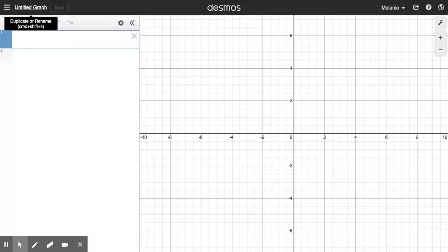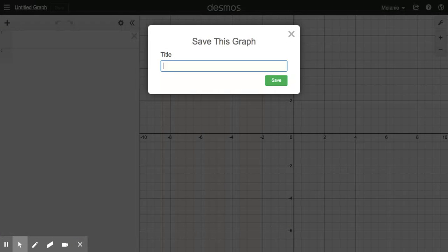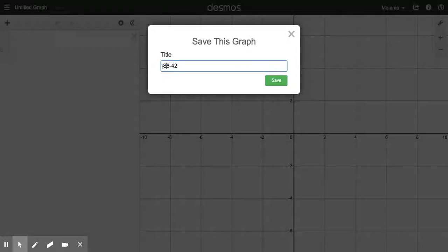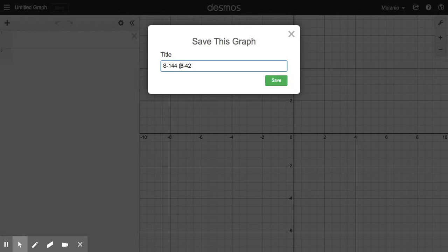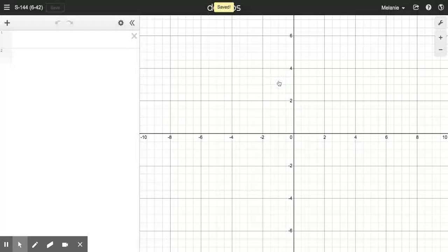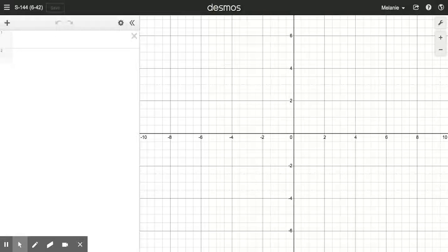Let's start with this one. I'm gonna label my graph 6-42 because that's the problem I'm working on. If it helps you can also put S144. Alright, so let's go ahead and read the first part of this problem. Part A says plot the following points on graph paper, so I'm gonna go ahead and do that. This is one way to do it so that you can connect the dots and create a shape.